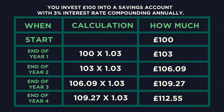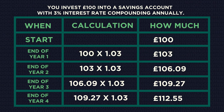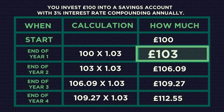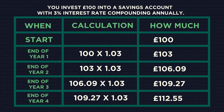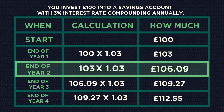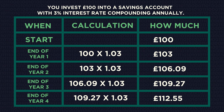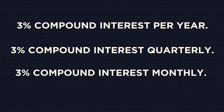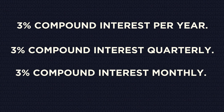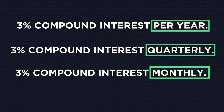With compound interest, the interest is calculated at the end of the time period — so usually a year — and then it is added to the new balance. You then start the next year with this new balance. The same thing happens at the end of the second year: interest is calculated and added on before you start the third year. The interest is compounding each time — it's being calculated and added on every year. You just need to pay attention to the time period in which the interest is compounding.